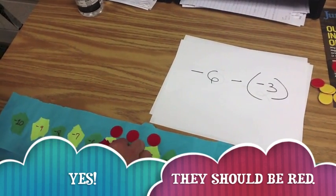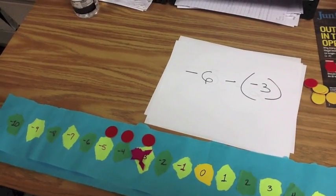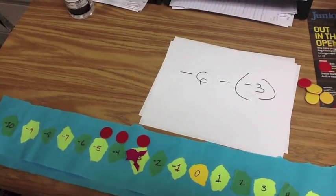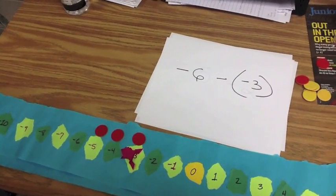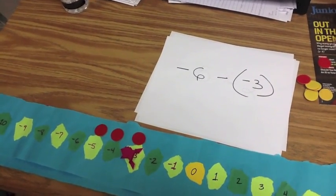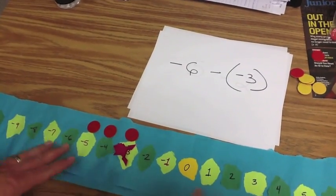So it's going to jump back three. One, two, three. Negative three. And negative six minus negative three is negative three, which is the same thing as negative six plus three. And that's how you subtract with our math frog.